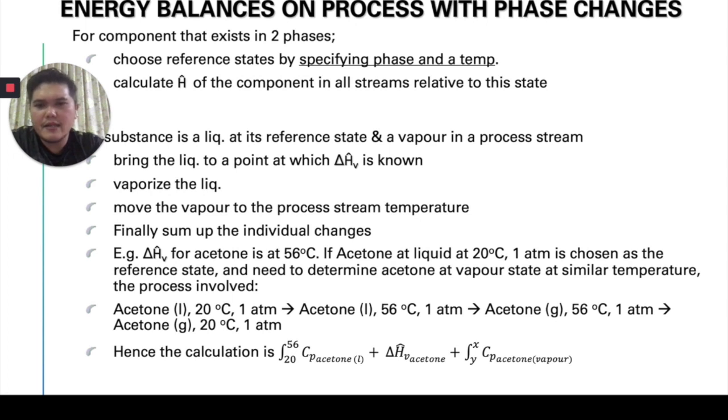For example, in this case, we have acetone at 56 degrees Celsius, which is the ΔH of vaporization. If let's say it started at 20 degrees Celsius, 1 atm, then we have to bring it to 56 degrees Celsius. And then, there is a change of phase from liquid to vapor. And then, after that, we need to bring it down again to the acetone at 20 degrees Celsius, 1 atm. This is what I had discussed earlier. Then, you can put up the calculation there, which is given as integral from 20 to 56 Cp dT and ΔH of vaporization and another Cp dT for vapor phase.